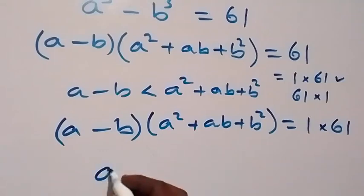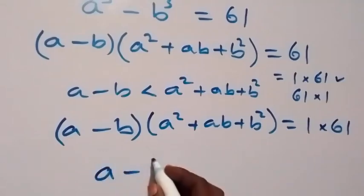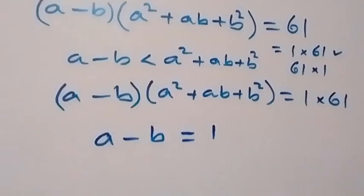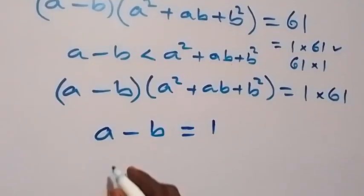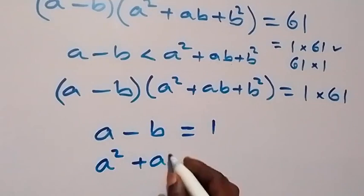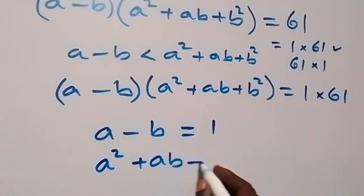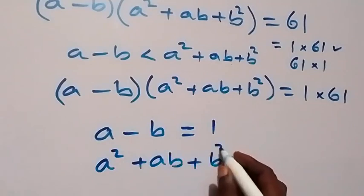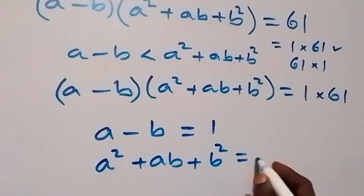From here we can equate: a minus b equals 1, and the other factor, a squared plus ab plus b squared, equals 61.